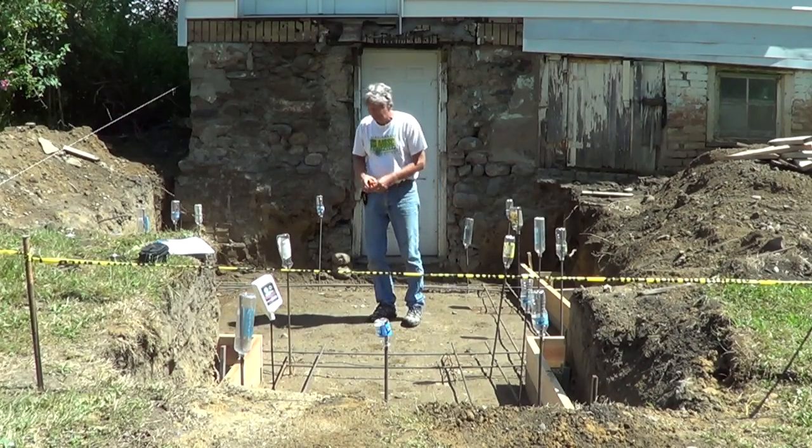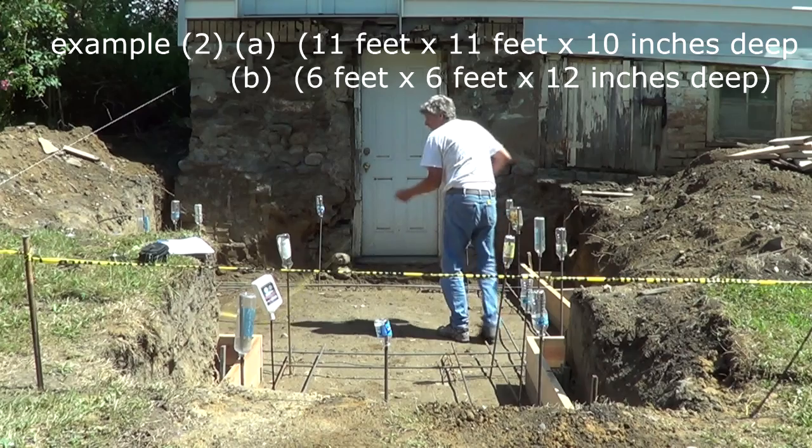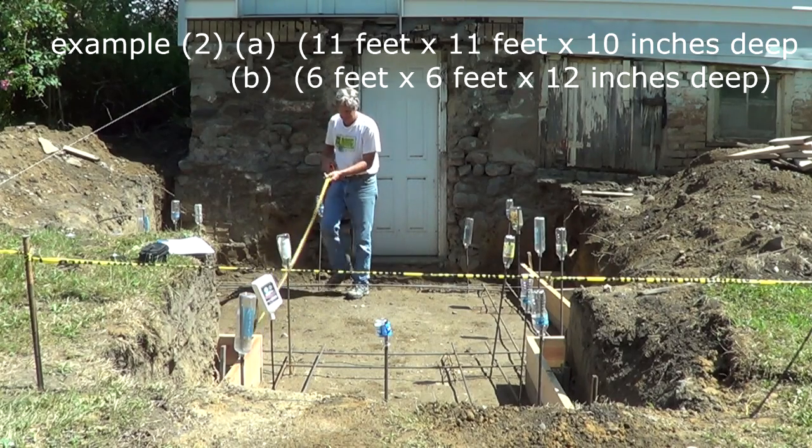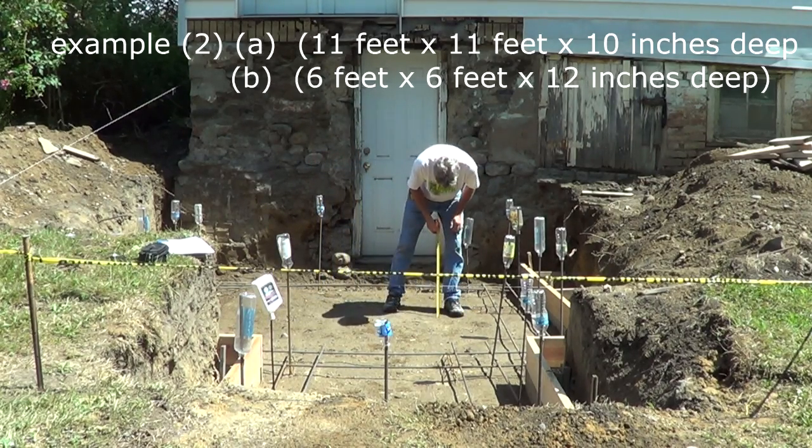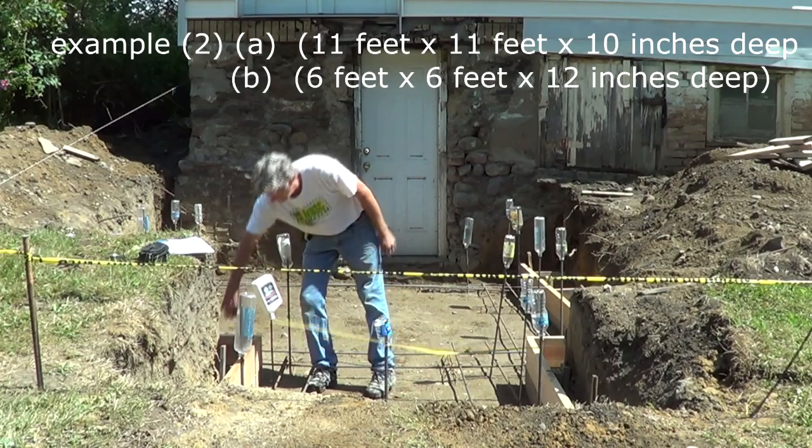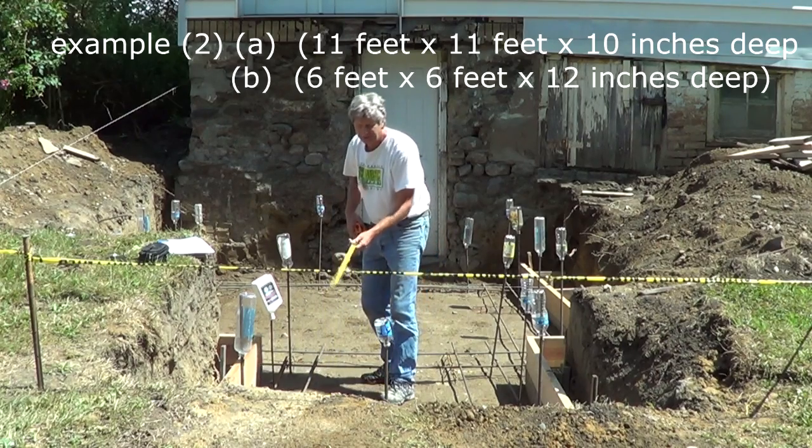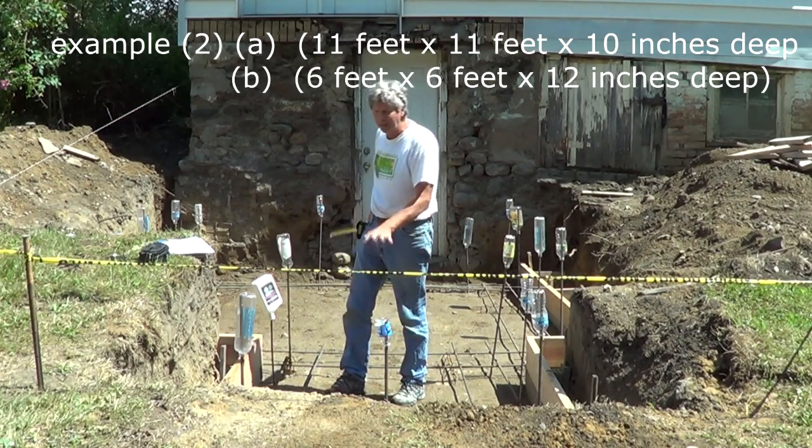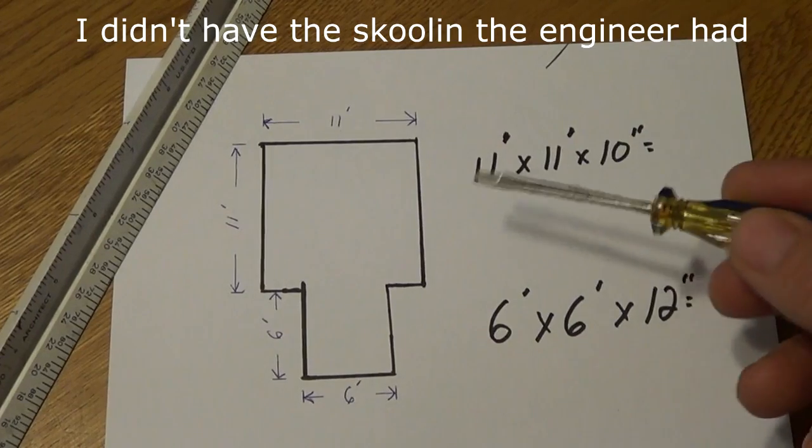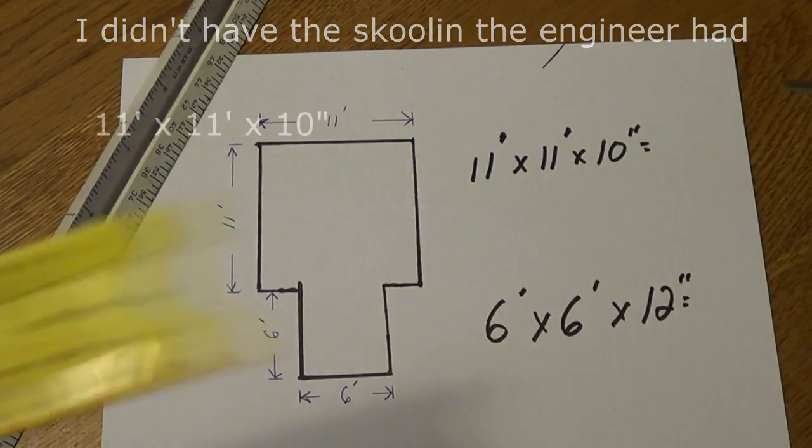Now we're going to pour this footer. And I know that this section right here is 11 feet by 11 feet by 10 inches deep. This section is 6 feet by 6 feet and it's 12 inches deep. So we've got our two blocks and we're going to check it out now to see how much concrete we need.